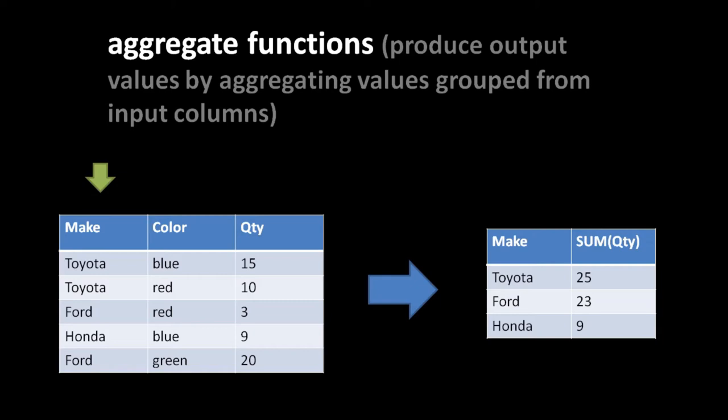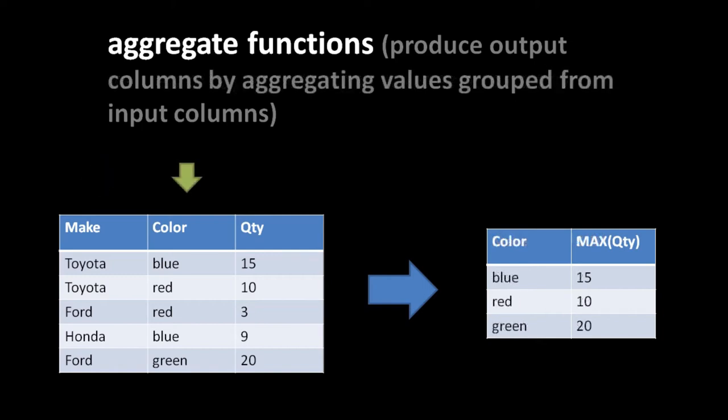For another example, grouping the inventory table on the color column and using the max function instead of sum. The max function takes all values from the group and returns the largest one. In the blue group, quantities are 15 and 9, so 15 is returned. In the red group, quantities are 10 and 3, so 10 is returned. In the green group, there's just one value 20, so the max function returns 20. Note that sum and max only work on numeric values - they wouldn't make sense on string values like Toyota or Ford.